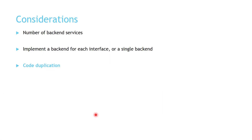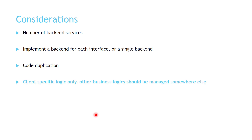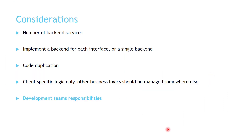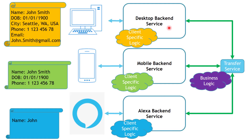You also need to be aware of code duplication. While creating separate backend services for each frontend, some code duplication is going to happen — however, you should aim to keep this as minimal as possible. Also, as we have seen, you should aim to have only client-specific logic stay in the backend service, while other business logic should be moved to common services. Then there is development team responsibilities — you need to decide whether each development team is responsible for a single backend service, or whether all teams are responsible for everything, depending on your operating model.